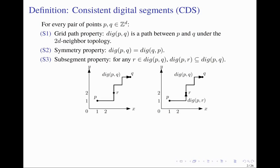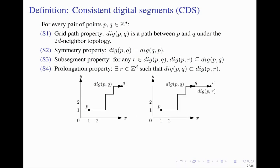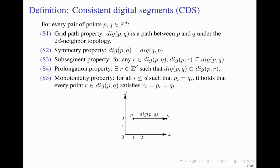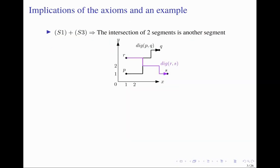For any grid point R on the digital segment from P to Q, it must hold that the digital segment from P to R is a subset of the digital segment from P to Q. Every digital segment can be extended — that means any digital segment is a subset of a bigger digital segment. If the start and end point of a digital segment have the same coordinate, then all grid points on this path must have the same coordinate.